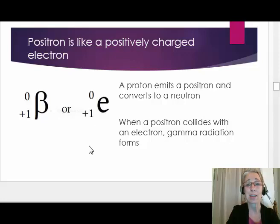Positrons do not last very long after they are emitted because as soon as they collide with an electron, which all atoms have, the mass of the positron and electron are converted to energy and gamma radiation is produced. Notice the mass number of zero and the atomic number of plus one.